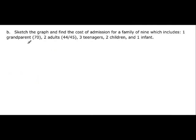Going on then, it says sketch the graph and find the cost of admission for a family of nine which includes grandparents who are 70. They're going to be $5. Two adults and that was $7. And three teenagers which are $5. And two children which is $2. And one infant which is $0. Remembering what we had here, let's draw our little graph. This is going to be age and this is going to be our output of age. So from 0 to 2 but not including 2, it's going to be the x-axis.